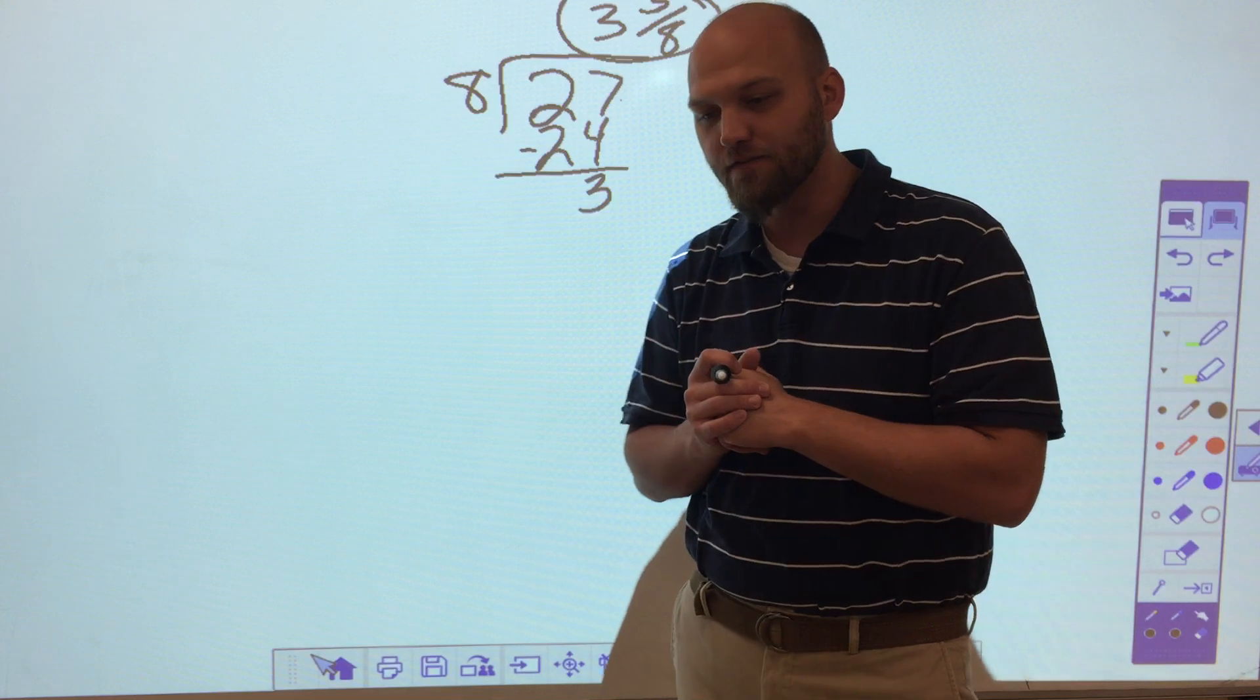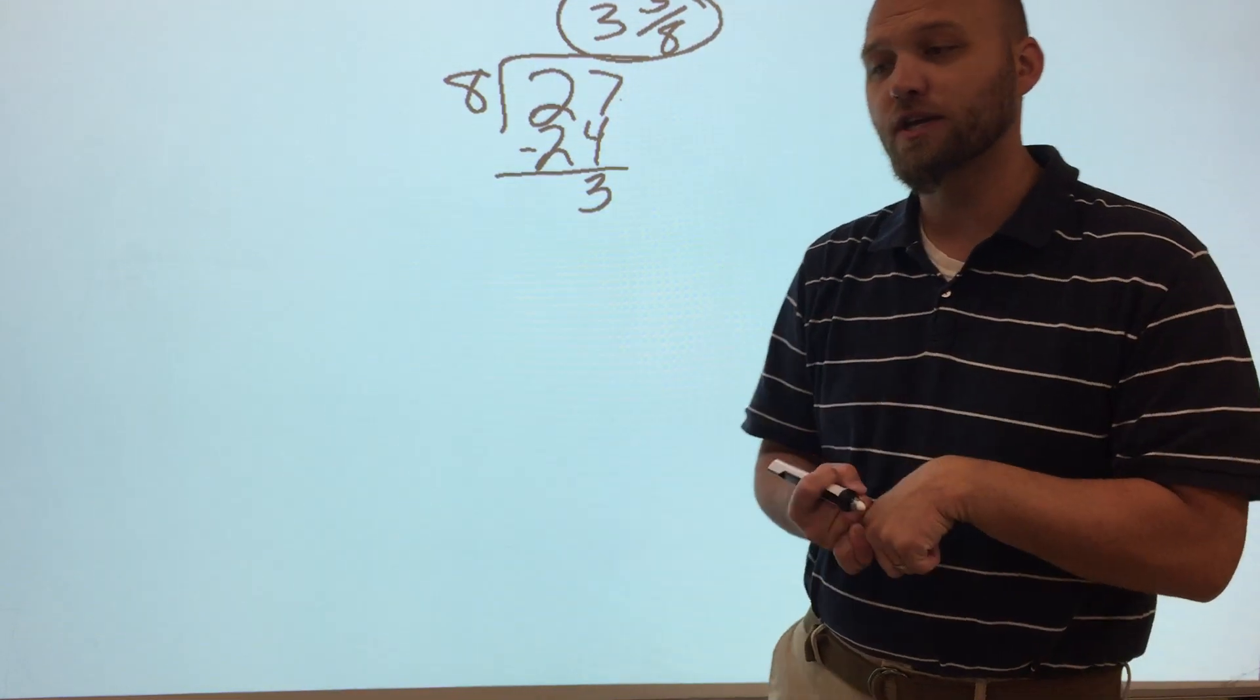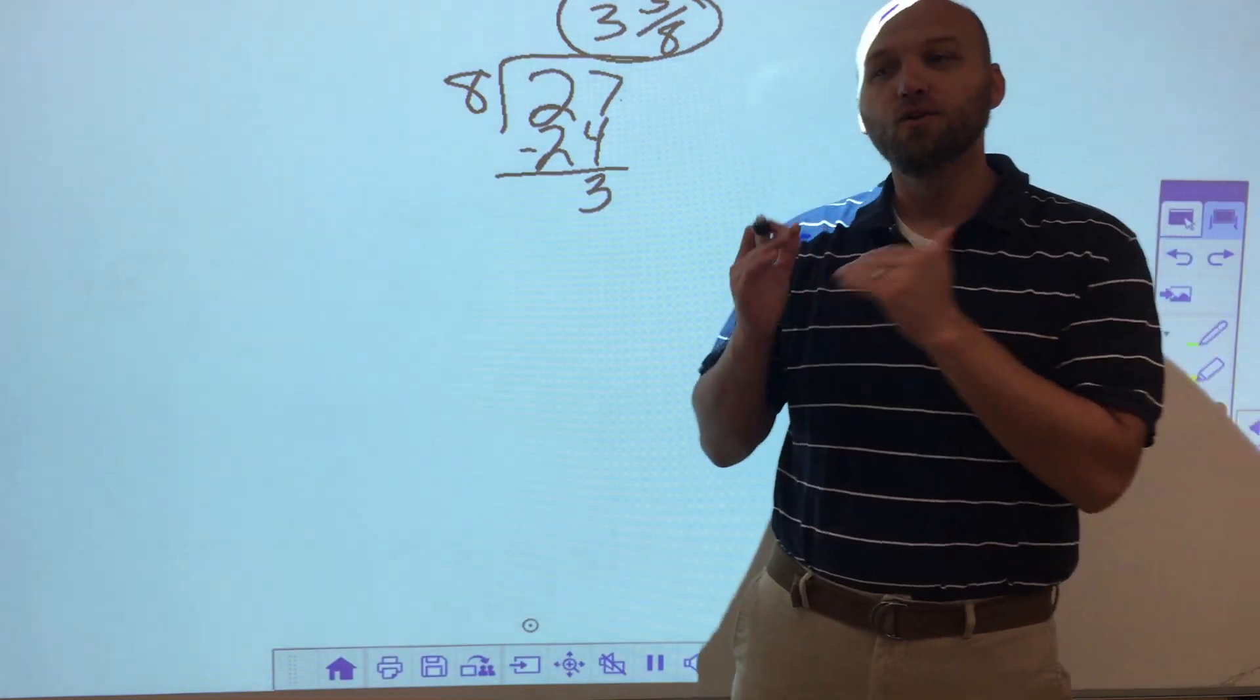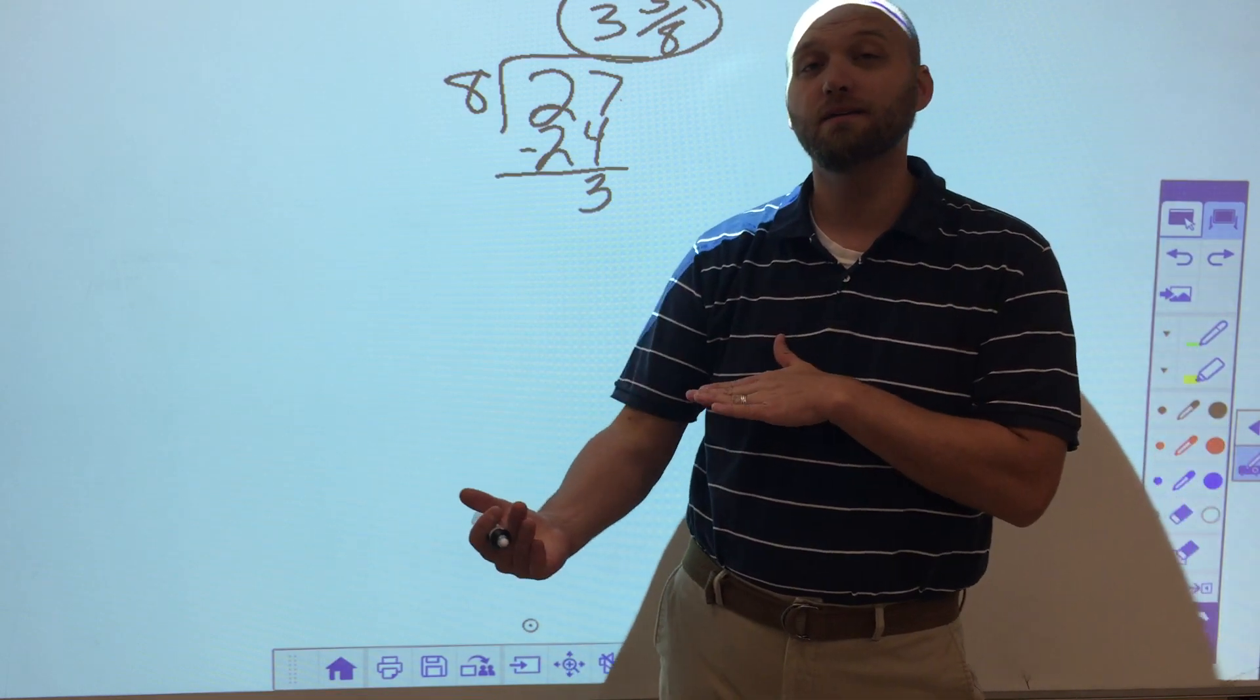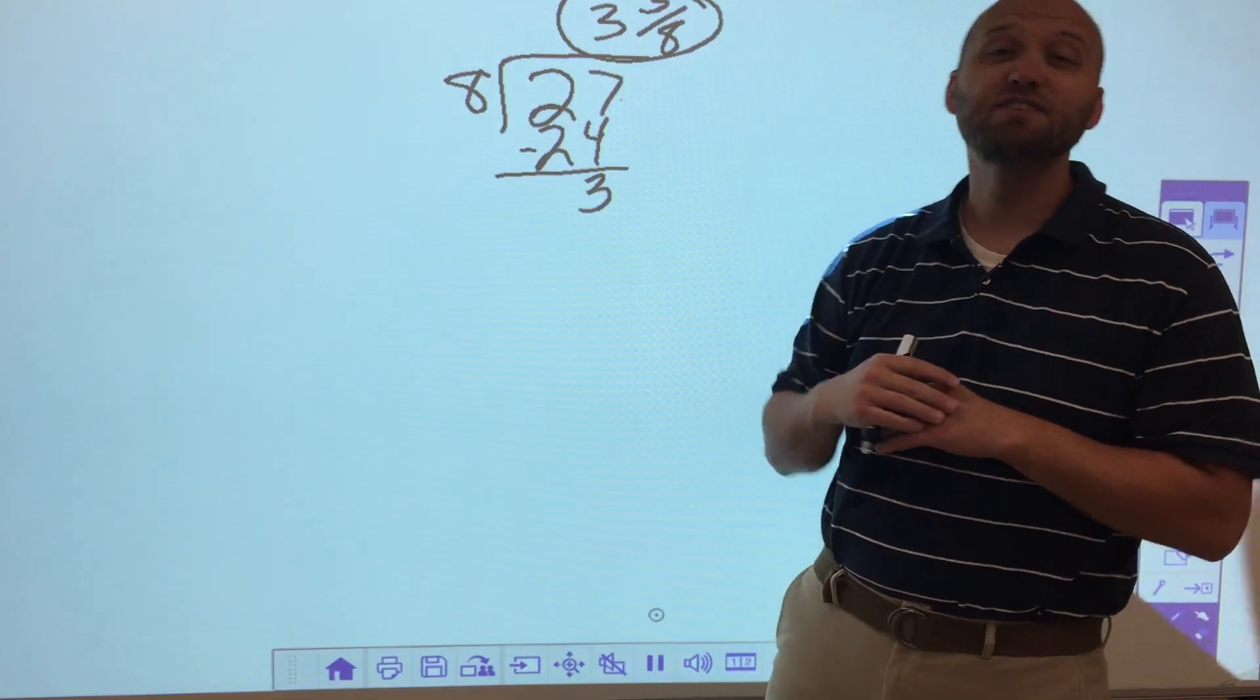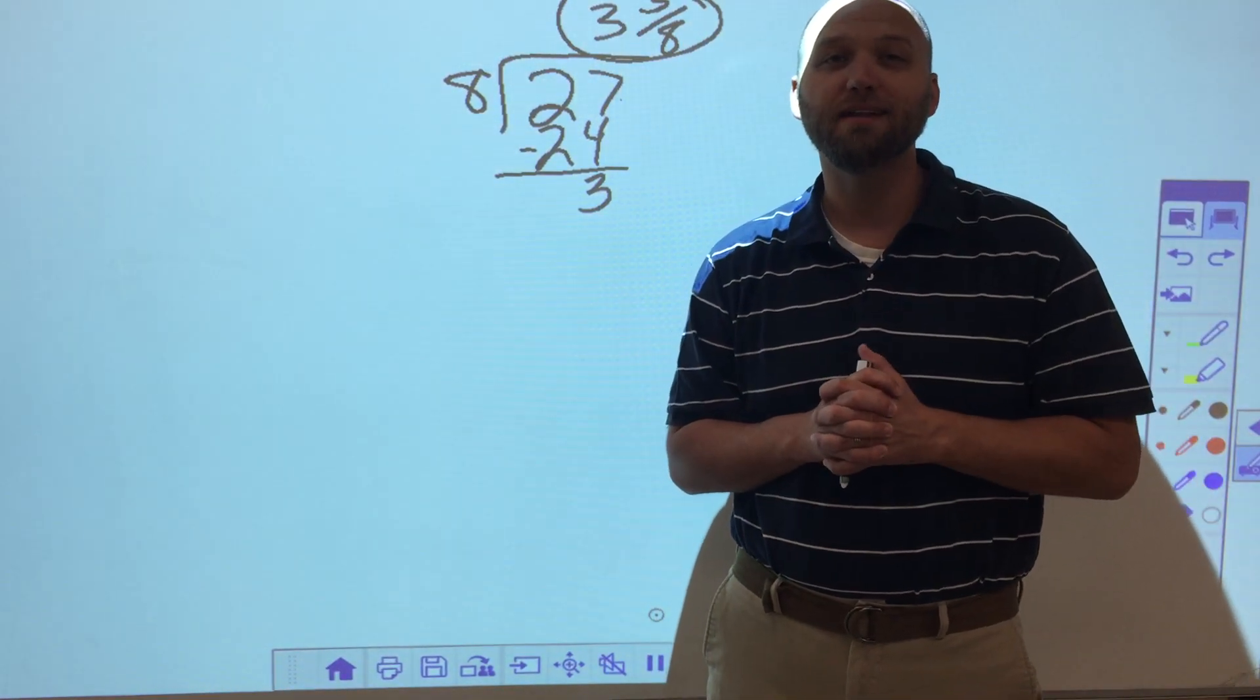Anyway, basic division. Estimation is a great way first, so you can check your work to make sure you're not making any decimal errors and then work the problem through. When you get to the end, look at the directions and see, did it ask me to show my remainder as a remainder? Did it ask me to show it as a fraction or did it ask me to show it as a decimal? And we're going to talk a little bit more about that later.